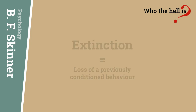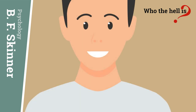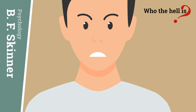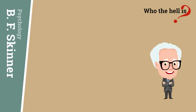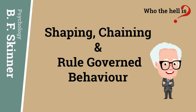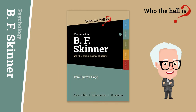Imagine how this might work with humans. How long would people continue to work if their employer stopped paying them their monthly salary? How long would they work in the hope that they might be paid before realising they were working for no reward? Skinner went much further than just studying rats. He set out to explain the variation and complexity of human behaviour through his concepts of shaping, chaining and rule-governed behaviour — but those are for another video. You can read all about Skinner and his Radical Behaviourism in Who the Hell is BF Skinner? by Tom Buxton Cope, available on Amazon or via the website at whothehellis.co.uk.